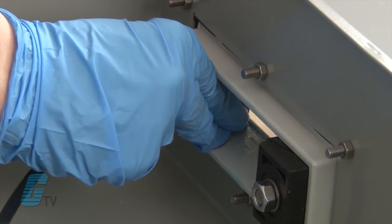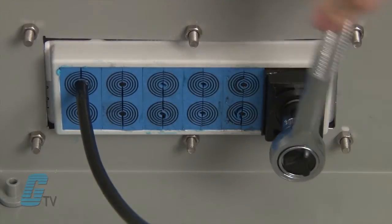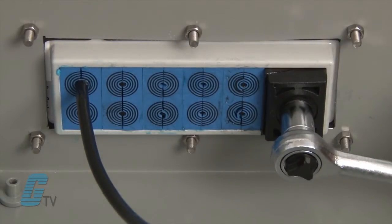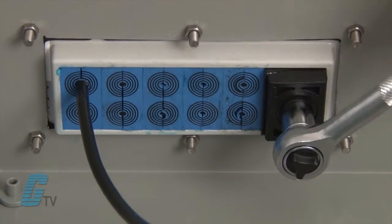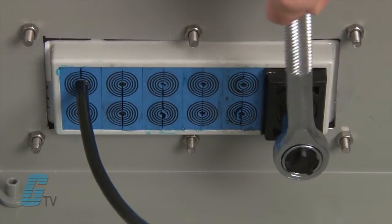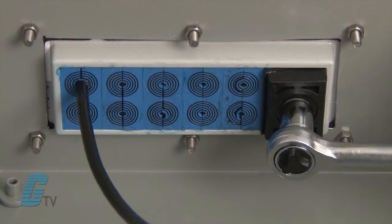Once all the modules are installed, the compression unit should be tightened to seal the frame. As the frame is sealed, excess assembly gel should be seen squeezing out between the modules.